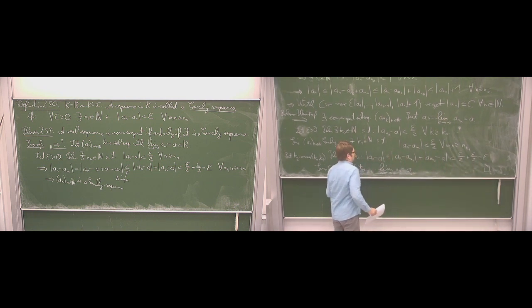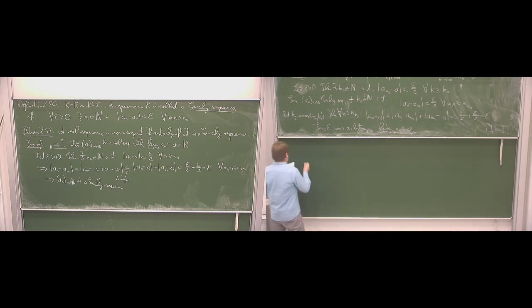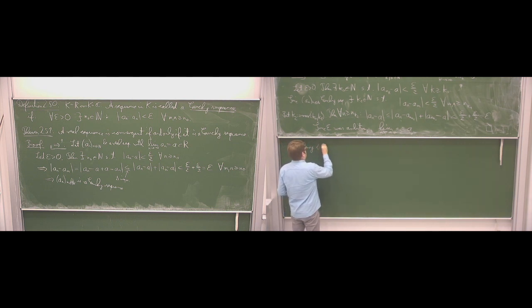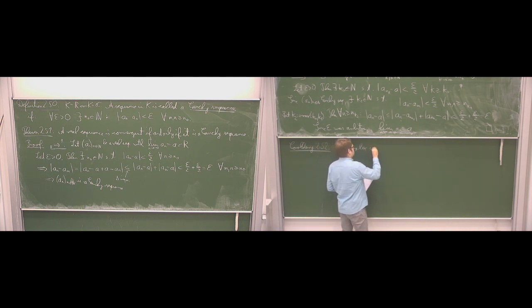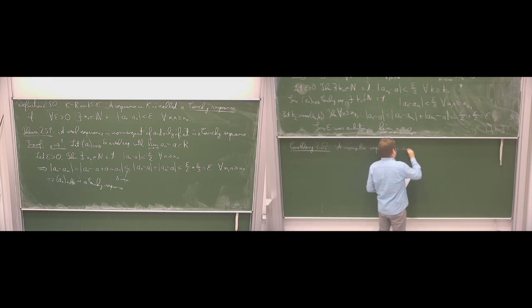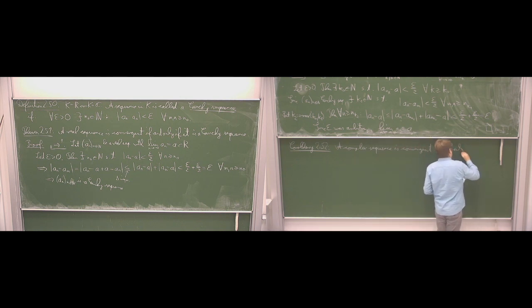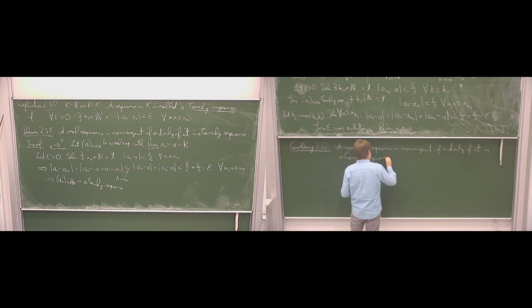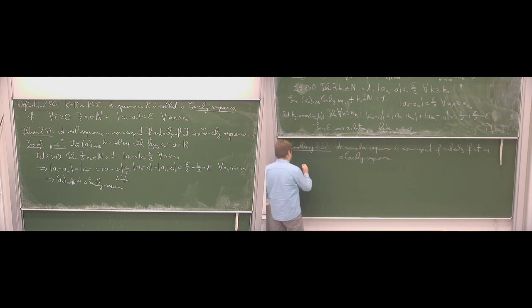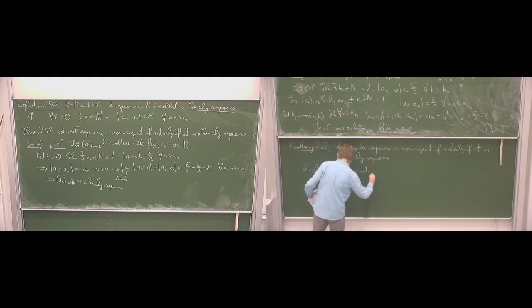For the complex case: Corollary 252 states that a complex sequence is convergent if and only if it is a Cauchy sequence. We will not give the proof here, but it is included in the lecture notes. One can use the real case and derive the complex case directly.